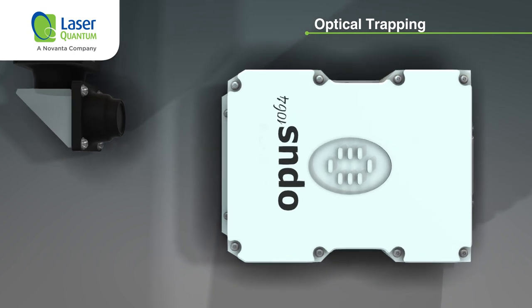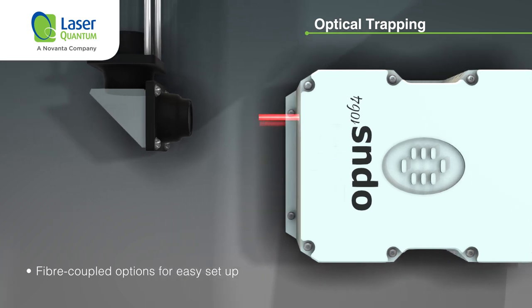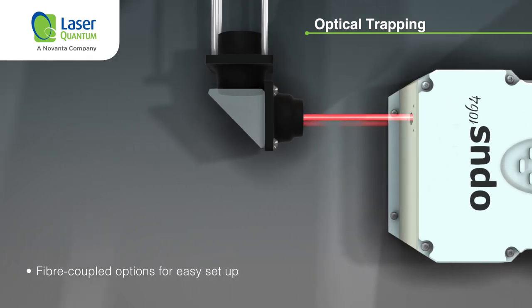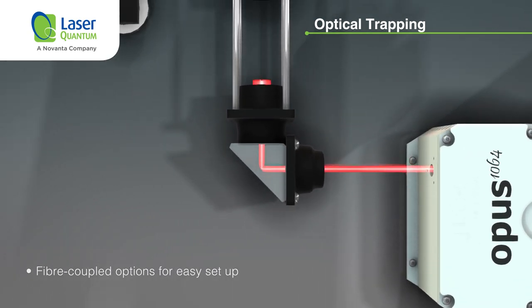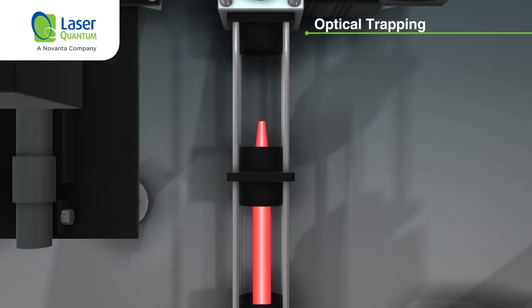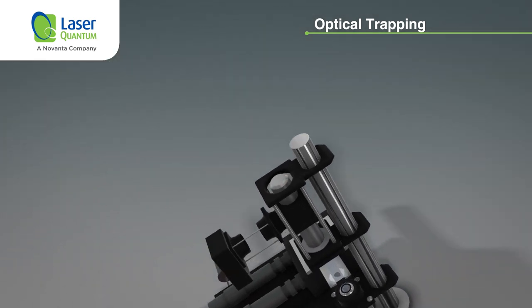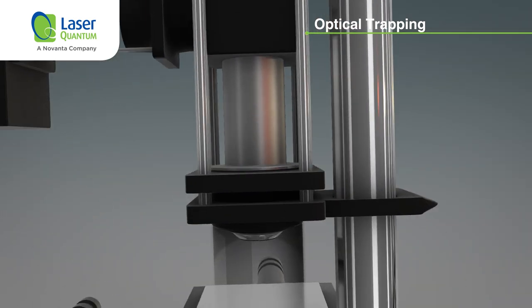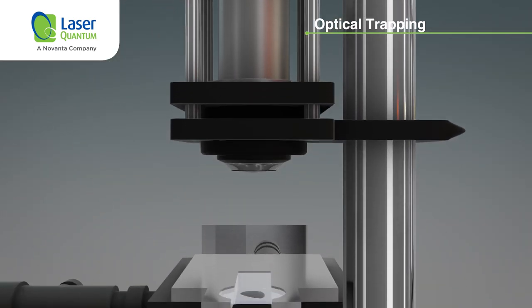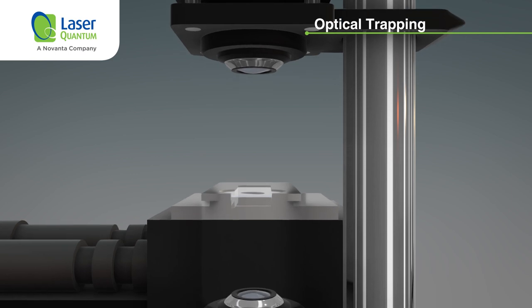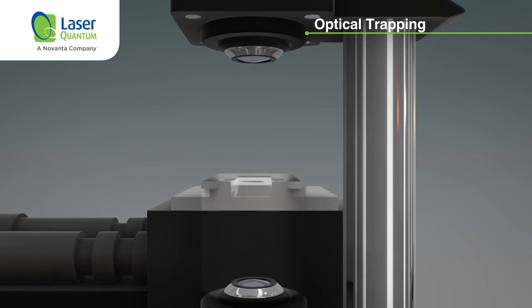Traps are microscope-based, as a tightly focused laser beam is required to give the smallest possible cross-sectional area for optimal control of the sample. The beam can be either free space or fiber coupled into an expansion and collimation module with beam conditioning optics providing focal adjustments.